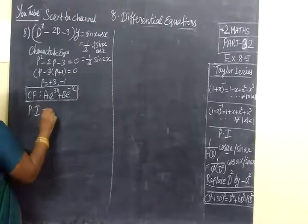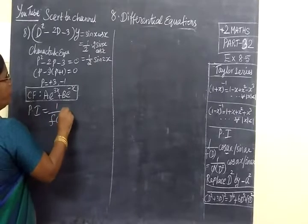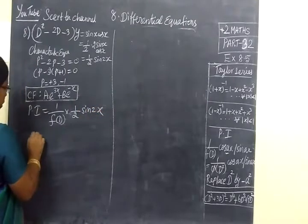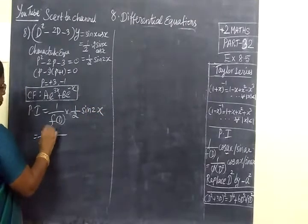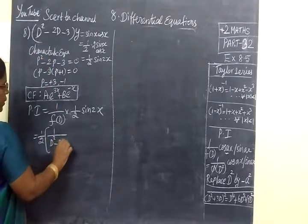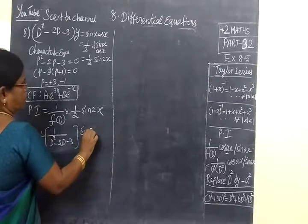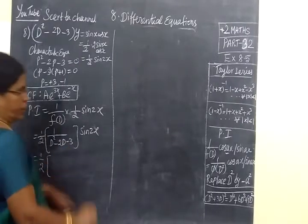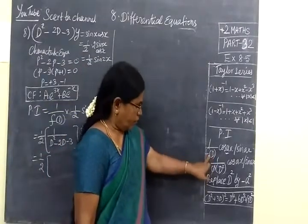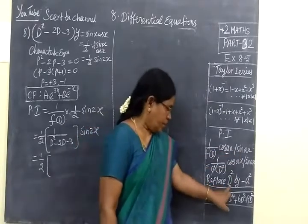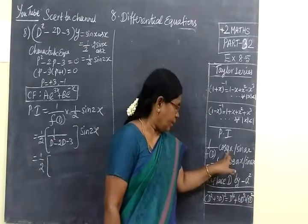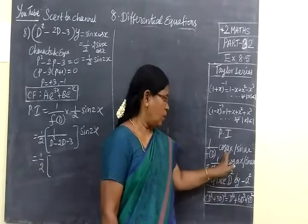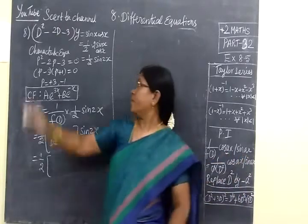Now, we are finding particular integral equal to 1 by F of D into half into sin 2X. So, 1 by F of D. F of D is D squared minus 2D minus 3 into sin 2X. So equal to half into... It is in the condition.